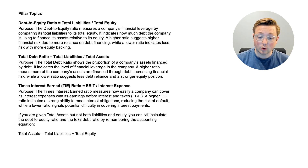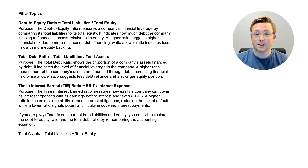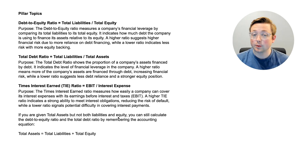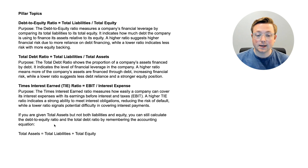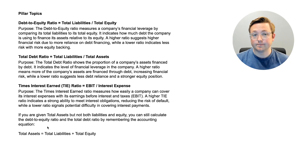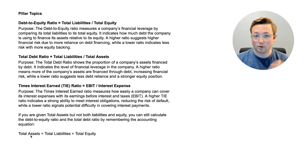One last tip: if you are given total assets but not both liabilities and equity, or if you're only given total liabilities and total equity and need to know the assets, if you have two pieces of the equation you can still calculate the debt-to-equity ratio and the total debt ratio by remembering the accounting equation. Total assets equals total liabilities plus total equity — so if you have at least two of these pieces, you can figure out the third.